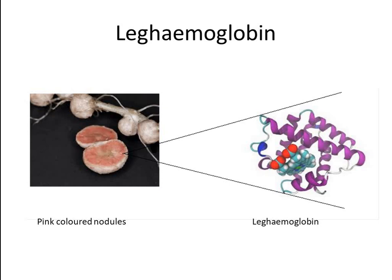Legumes and actinorhizal plants regulate gas permeability in their nodules, maintaining a level of oxygen within the nodules that can support respiration but is sufficiently low to avoid inactivation of nitrogenase. Gas permeability increases in the light and decreases under drought or upon exposure to nitrate. The mechanism for regulating gas permeability is not yet known.